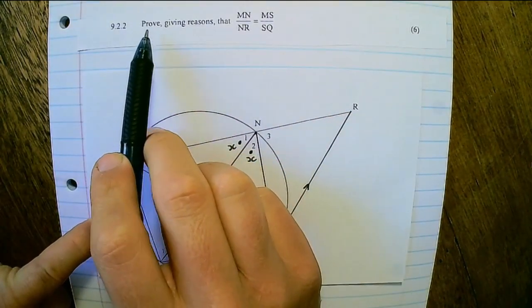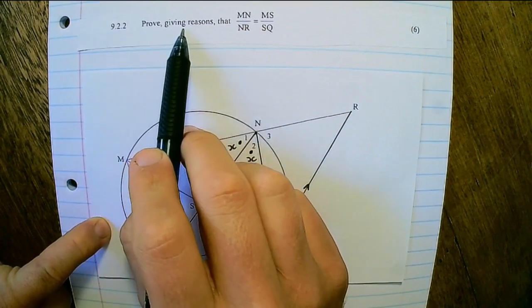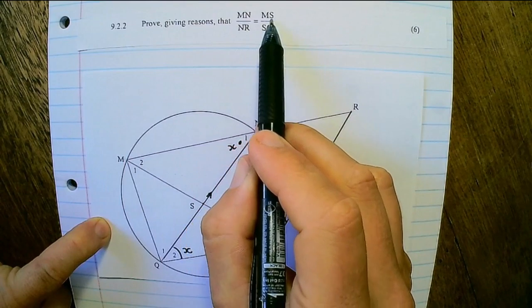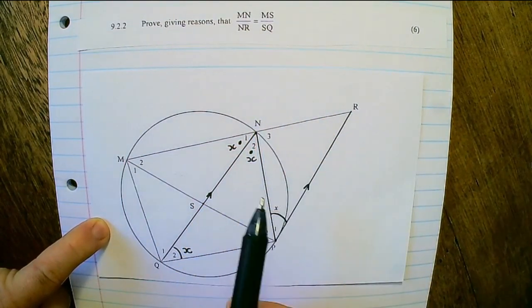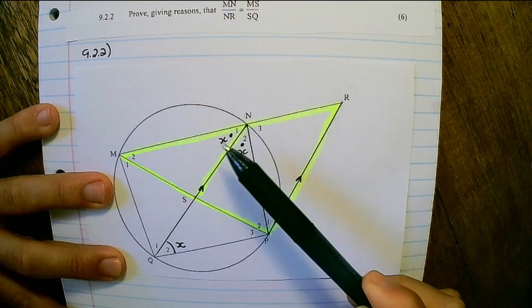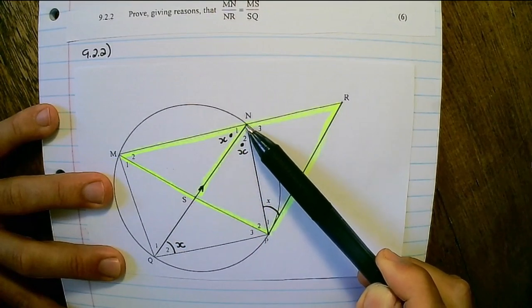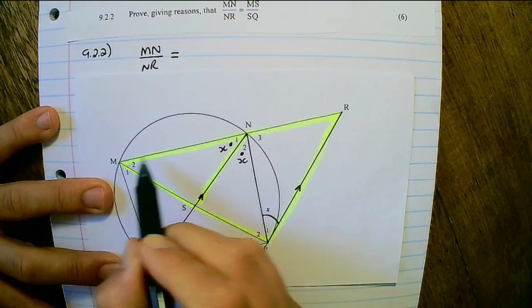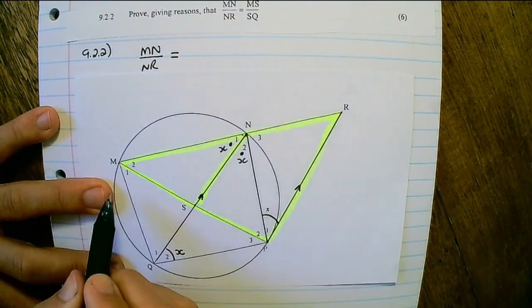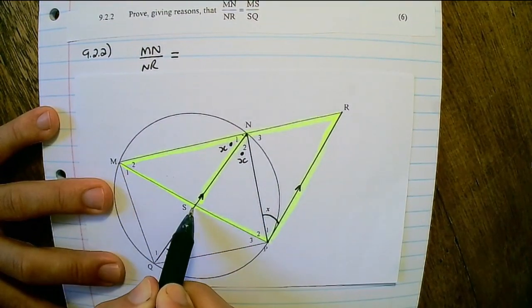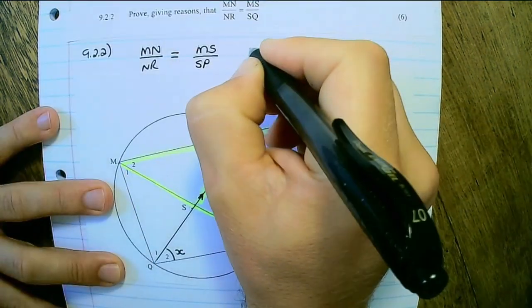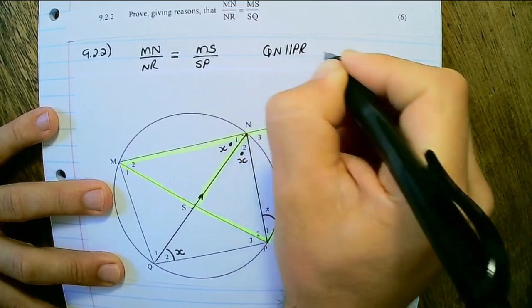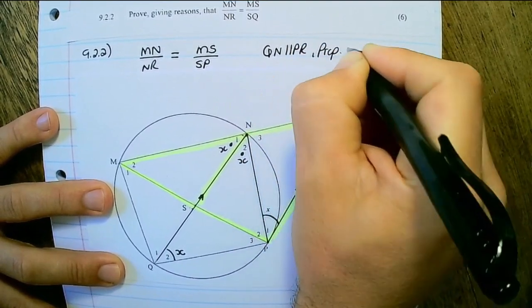Next it says prove giving reasons that MN divided by NR is equals to MS divided by SQ. So in the highlighted triangle we can see we have NQ as parallel to RS. That means that MN over NR would be equal to MS over SP. And the reason is QN parallel to PR the proportionality theorem.